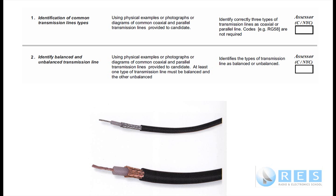I'll read them. Number 1: using physical examples or photographs or diagrams of coaxial cable and parallel transmission lines provided to the candidate, identify correctly three types of transmission line as coaxial or parallel line. We're not interested in whether it's RG8, RG58 or anything like that.